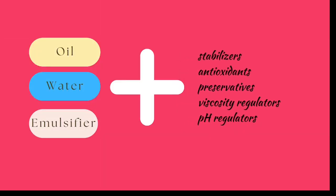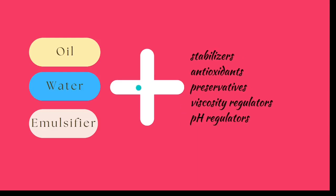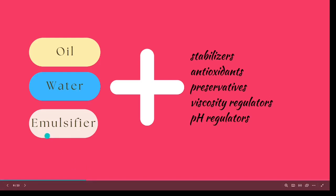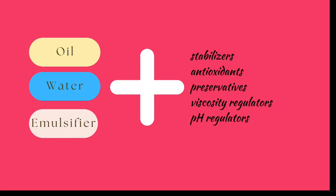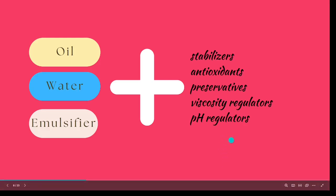By having an oil phase, a water phase, and an emulsifier we have the basics for making an emulsion. But to create safe, stable, efficient, and compliant emulsions we need some additives. The very basic additives needed for a stable and safe emulsion are: stabilizers, antioxidants, preservatives, viscosity regulators, and pH regulators.